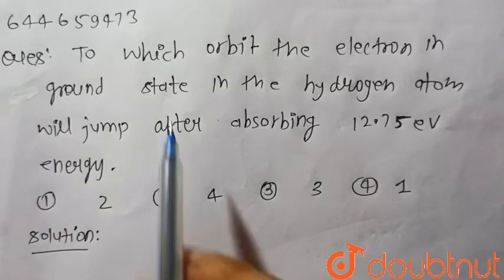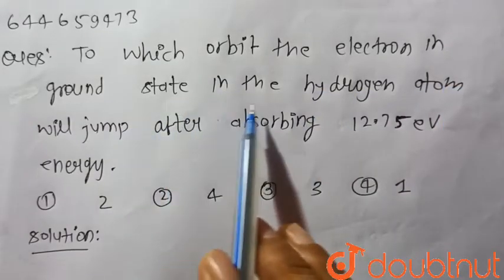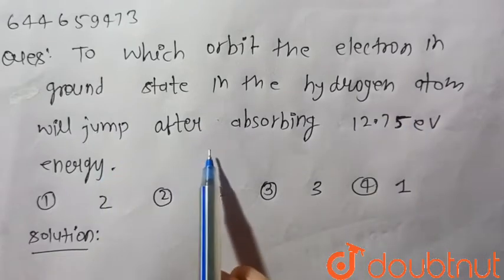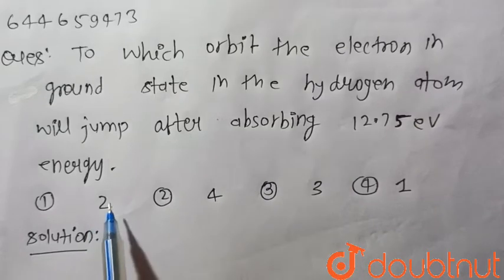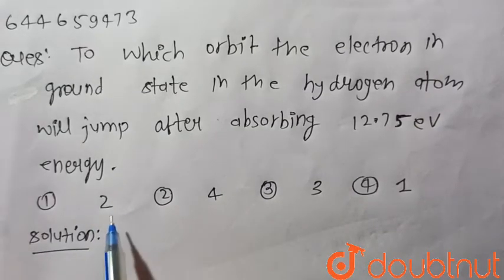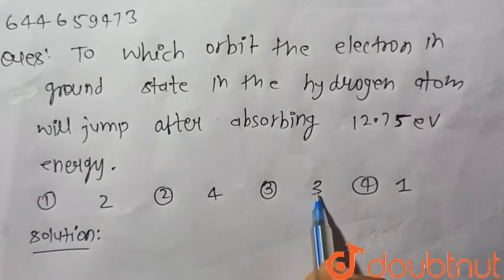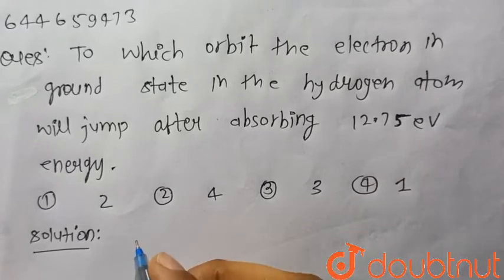Hello everyone, consider the given question: to which orbit the electron in ground state in the hydrogen atom will jump after absorbing 12.75 electron volt energy? Four options are given: first is 2, second is 4, third is 3, and fourth is 1.